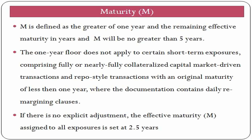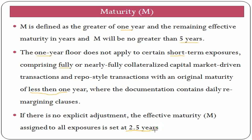Now let's move on to maturity. This is the effective maturity, which means the normal maturity of a trade but after applying a cap and floor of five years and one year respectively. For example, if there is a loan with a maturity of 20 years, for risk weight computation we will cap it at five years. Similarly, if there is a loan with a maturity of three months, we will floor it to one year for risk weight purposes. Generally, if all other parameters remain constant, higher the maturity, higher the risk weight. In some cases maturity can be less than one year — the one-year floor will not apply to certain short-term transactions that are fully or nearly fully collateralized with an original maturity of less than one year. Where maturity is not available, we take 2.5 years as the default maturity.